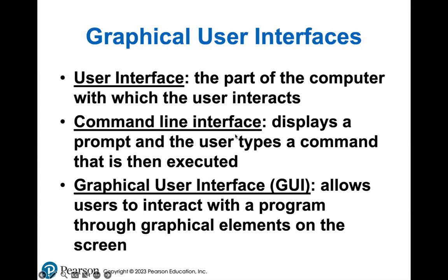Just a quick recap of some terms we need to be familiar with. First of all, user interface — that is everything that you see on your computer. Basically any part of your program that you can interact with: anything that you can click, any buttons, if you can scroll — that is the user interface. That is the way that the background code is interacting with the front-end code.